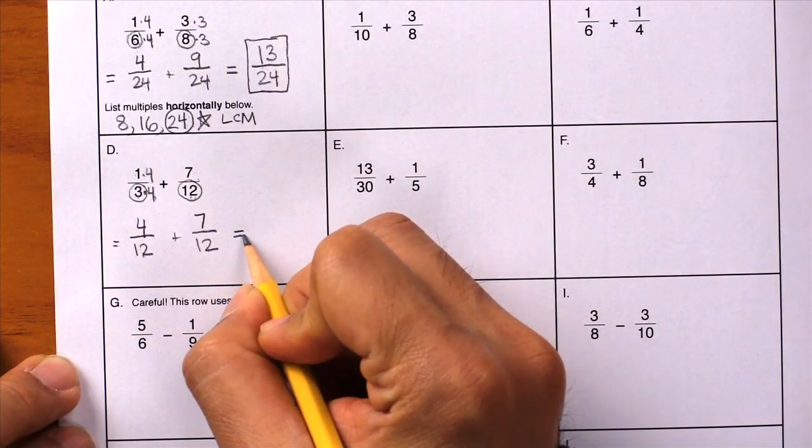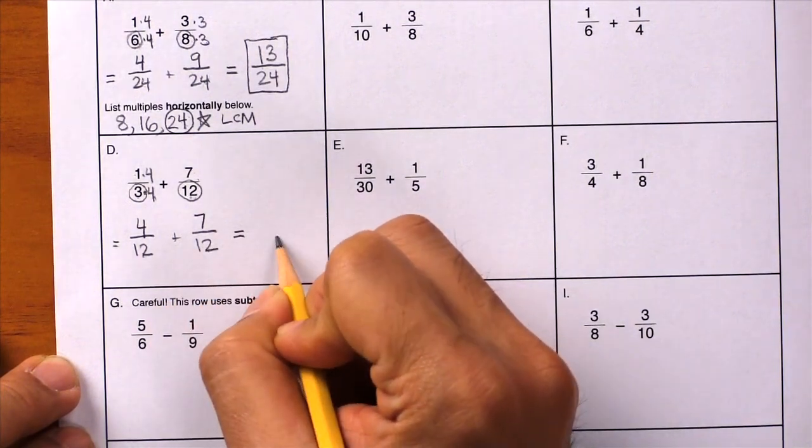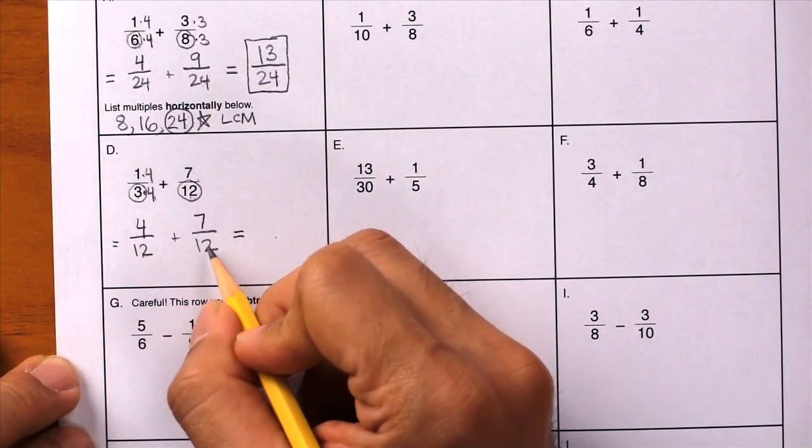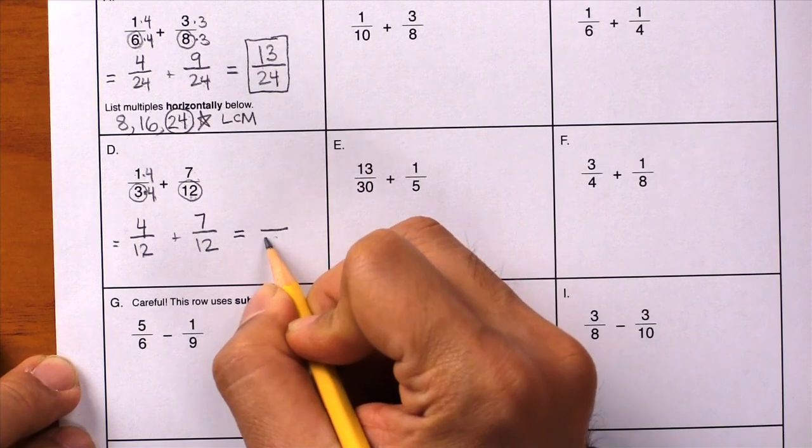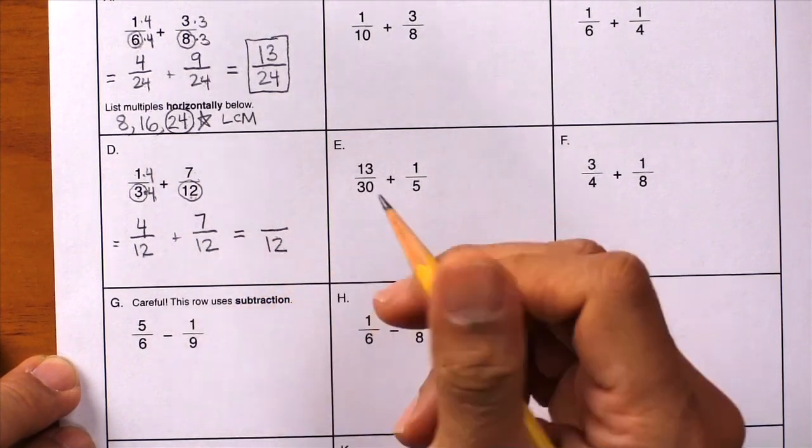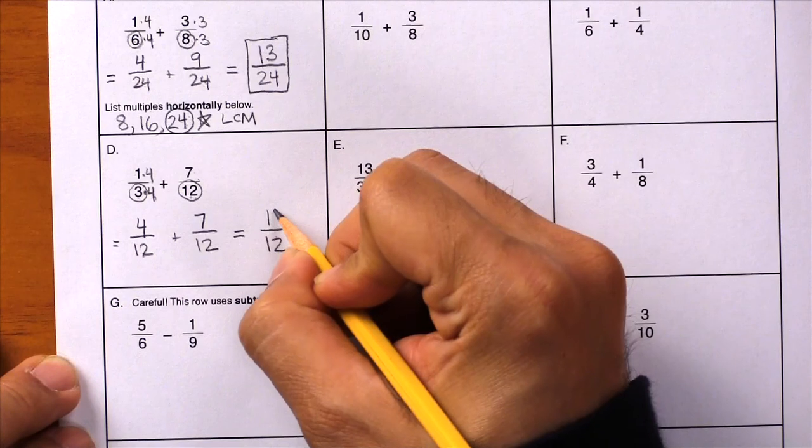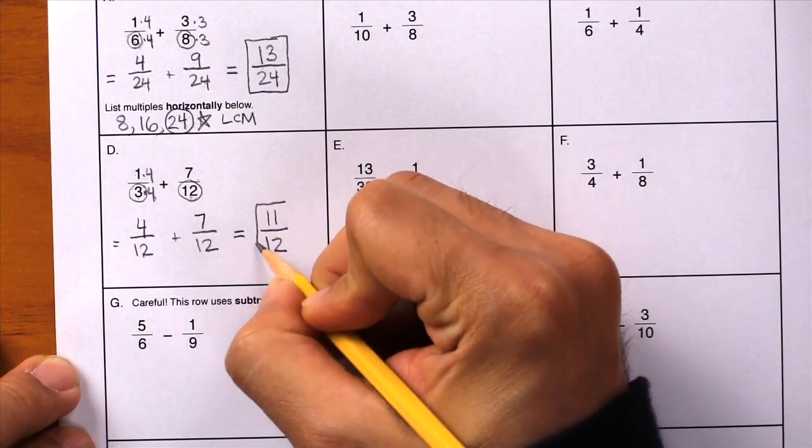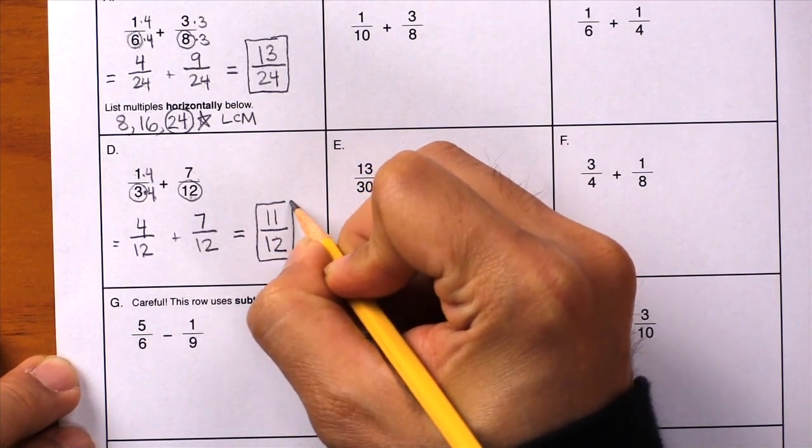Now it turns into a simple addition problem. Just like apples plus apples give you apples, twelfths plus twelfths give you twelfths. How many twelfths? And we have eleven twelfths. Box your answer, and letter D is done.